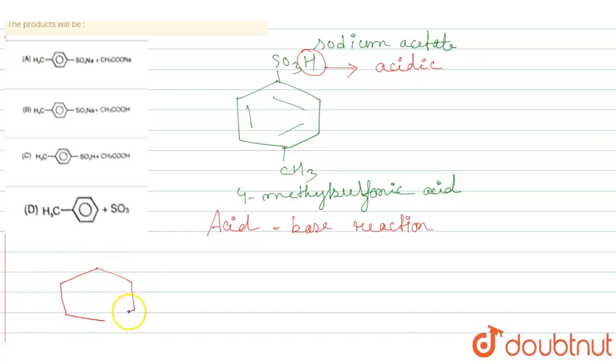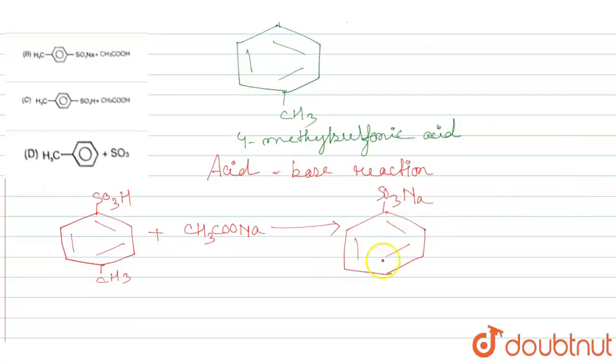And as salt is formed, so the reaction will be: CH3-C6H4-SO3H plus CH3COONa gives CH3-C6H4-SO3Na plus CH3COOH.